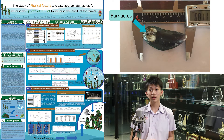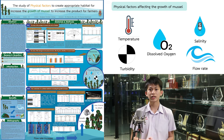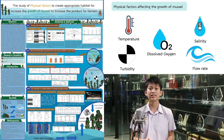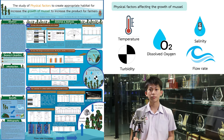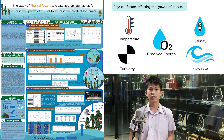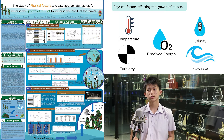Other than biological factors, I would like to know if there were any physical factors affecting the growth of mussels. So, I started my literature review and I found that temperature, salinity, dissolved oxygen, turbidity, and chlorophyll are having an effect on the growth of mussels.